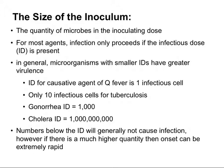Another thing to consider at the portal of entry is the size of the inoculum — how many microbes are in the inoculating dose. If there's not enough, then we won't see an ensuing infection. Most agents only proceed to infection if the infectious dose, or ID, is present. In general, microorganisms with smaller IDs have greater virulence. For example, the ID for Q fever is just one infectious cell — very small ID and very high virulence. It only takes 10 infectious cells for tuberculosis. For gonorrhea it takes a thousand, and for cholera the ID is one billion.